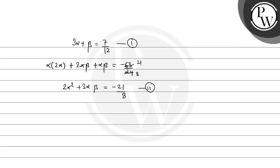The third information is the product of the roots: α multiplied by 2α multiplied by β equals minus λ divided by 24, which gives 2α²β equals minus λ divided by 24. Consider this as equation 3.